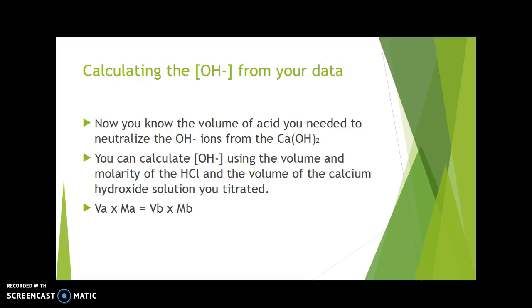You can now calculate the hydroxide ion concentration, because you know the volume and molarity of the acid and you know the volume of the calcium hydroxide solution that you added to the flask where you were doing the titration. The volume of the acid times the molarity of the hydrogen ions is equal to the volume of base times the molarity of the hydroxide ions. So you can solve for this parameter.